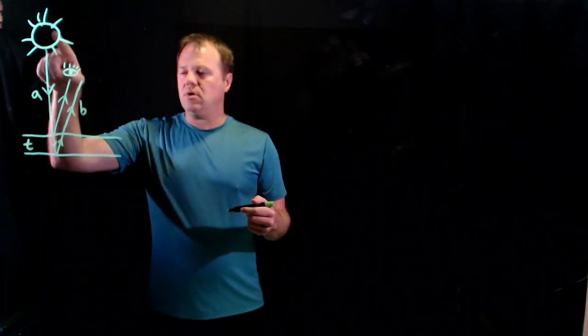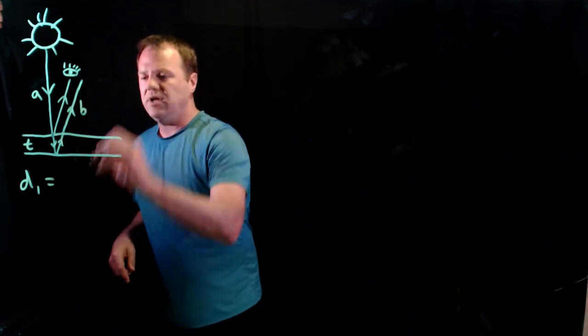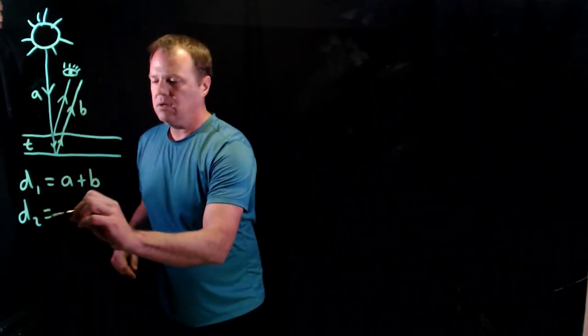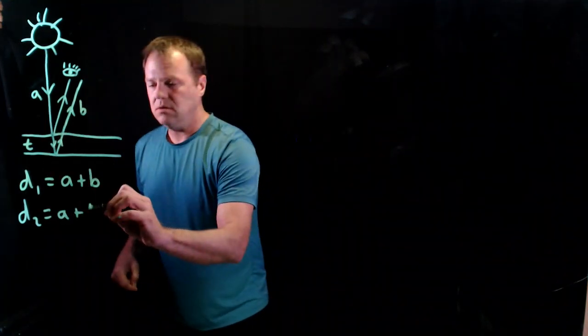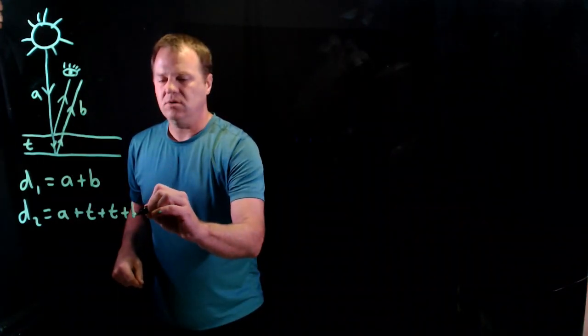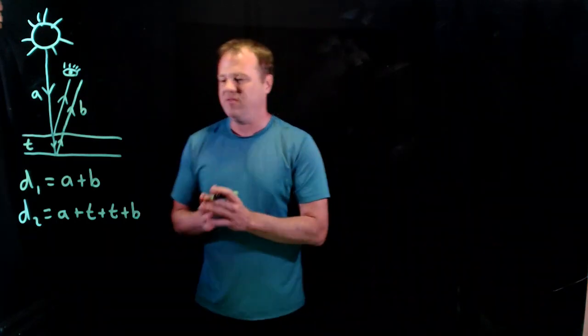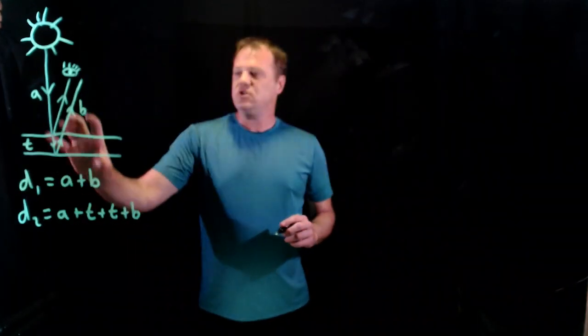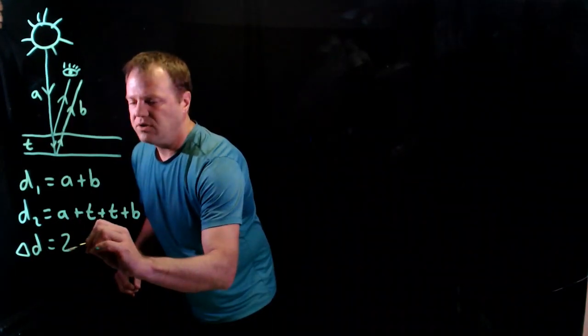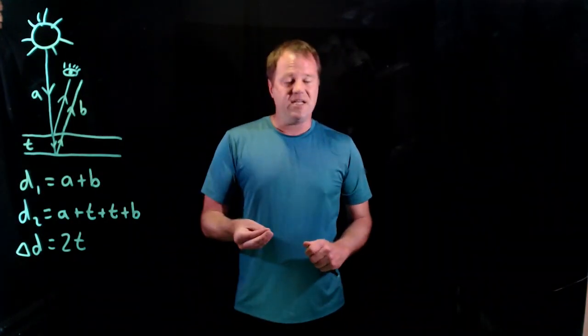So the light that reflects off of the surface will go a distance. We'll call that distance A plus distance B. And then the second distance will be A plus a distance of T plus another distance of T plus a distance of B back up to the observer. Now, we're not taking into account trigonometry or anything. We're basically assuming straight lines, but we don't want everything overlapping. So I'm drawing them at a little bit of an angle. So the path difference will be one distance minus the other. So I take this minus this, and I get ΔD equals 2T. So the path difference for thin film problems will typically be twice the thickness of the thin film.